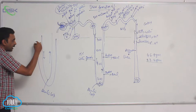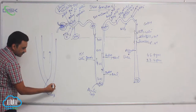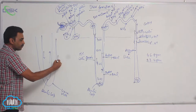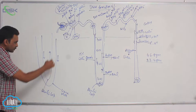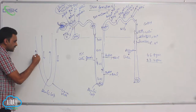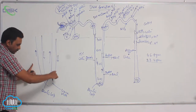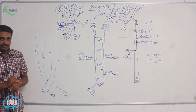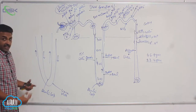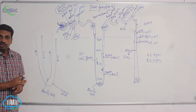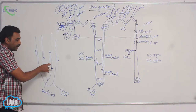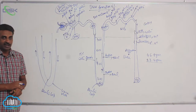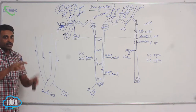Vasa recta is a blood capillary running parallel to Henle's loop. If you observe the direction of blood flow in vasa recta — this is the descending limb of vasa recta and this is the ascending limb of vasa recta. The movement of blood inside vasa recta also exhibits counter-current mechanism. The ascending limb of Henle's loop and the descending limb of vasa recta are close to each other and exhibit counter-current.